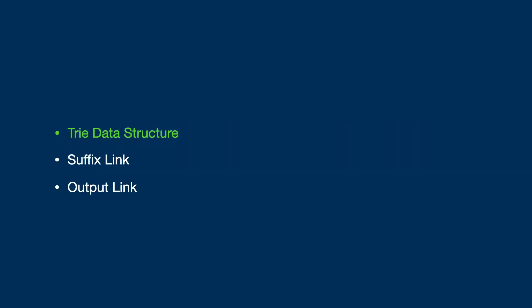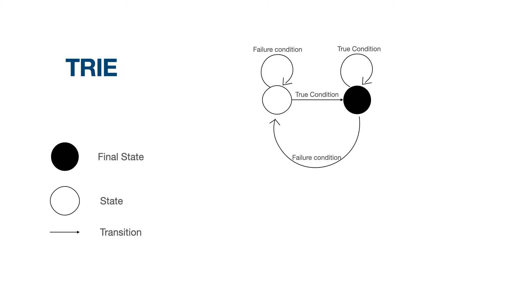First, let us see about trie data structure. We define the trie data structure in this manner. There are three things to keep in mind: one is the final state, one is state or current state, and one is the transition. We can transit in any way we want. Like if there is a failure condition, we can get back to the same state we are in. And if there is a true condition, we can either come back to the same state or go to the next state. This is how we define the trie data structure. You will understand when we solve a problem more clearly.